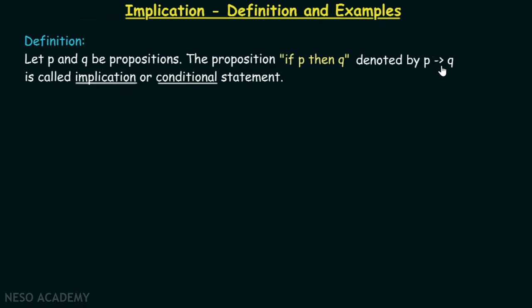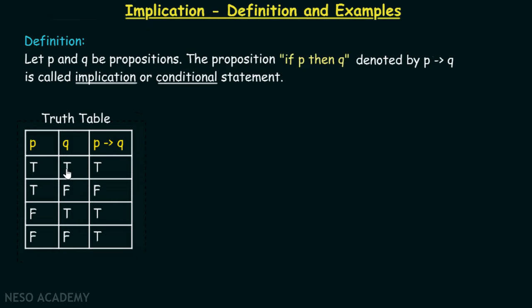Now let's consider the truth table of implication. When P is true and Q is true, then P implies Q is true. When P is true and Q is false, then P implies Q is false. The most important point we need to understand is that when P is false, it doesn't matter what the truth value of Q is — P implies Q would always be true.